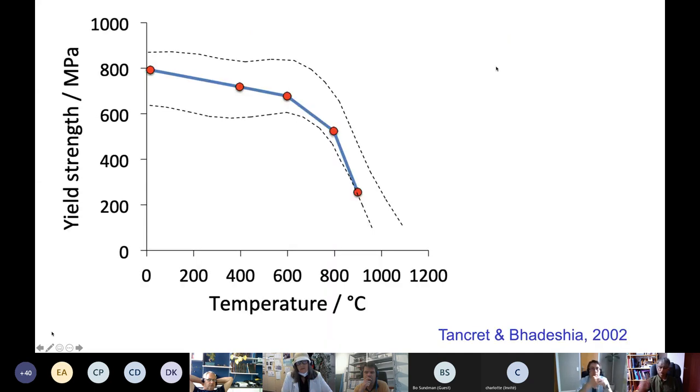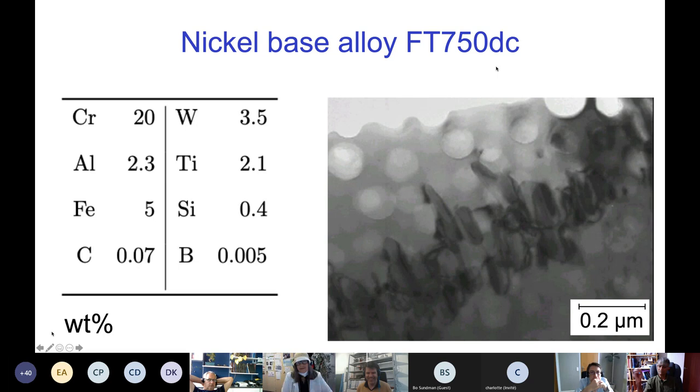It even includes iron so that we can use crap material. Iron is not good actually to have in the alloy, but nevertheless if you want to use crap materials then you need to include it. And we only need about 20 percent of gamma prime, so we designed it for that purpose.